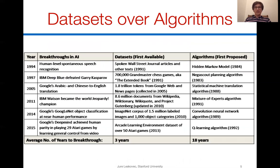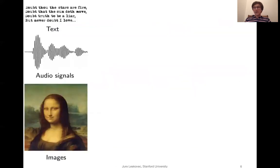Another important thing to keep in mind is that data sets kind of trump algorithms. For breakthroughs in machine learning and AI, it generally takes only about three years between when the data becomes available and when the breakthrough happens, versus about 18-20 years between when the algorithm was first proposed and the breakthrough. There is an unreasonable effectiveness of large-scale data that trumps the algorithms.